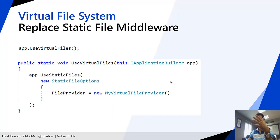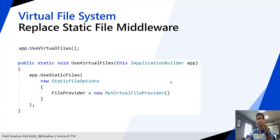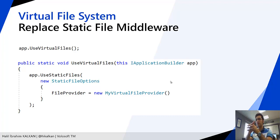In that way, ASP.NET Core can gracefully work with virtual files — that means embedded files, dynamic files, or physical files combined into a single file system. Every module can contribute to this virtual file system on application startup by providing its embedded resources to the virtual file system.